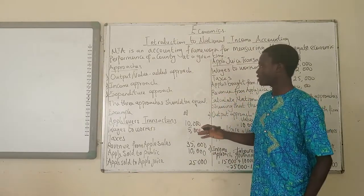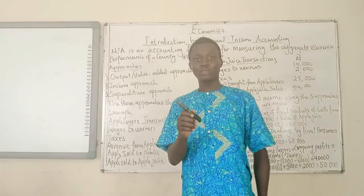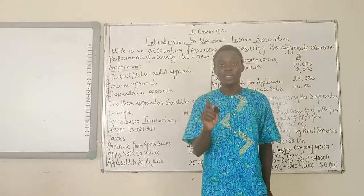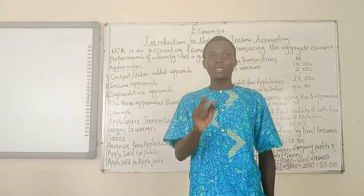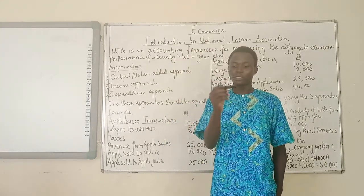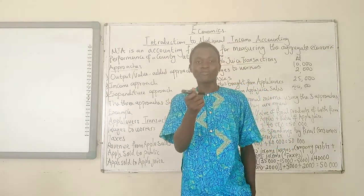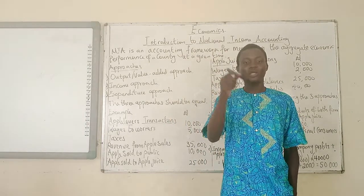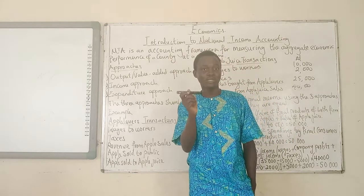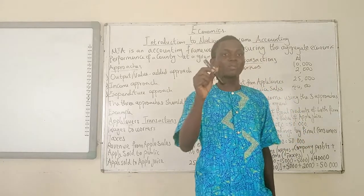Now there's something we need to note — the three approaches should be equal. And I will tell you why. Let's just look at this market as an example. Let us assume that I am the producer of this market and this is the only product produced in this economy right now, and you that are viewing this are the only consumer. The value of this market is 100 Naira. So that is the output approach — the value I'm placing on this market is 100 Naira. If you are to buy it, you are going to buy it at that price, 100 Naira.